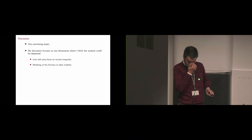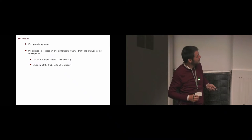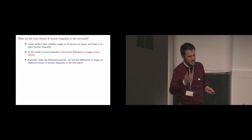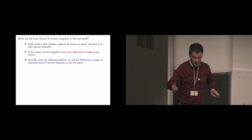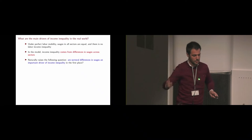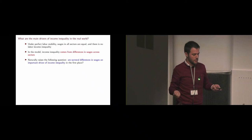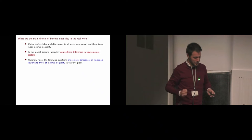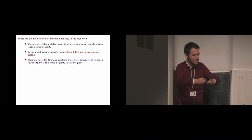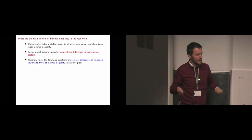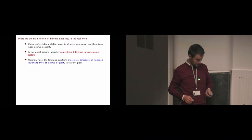Let me start by relating the model to data and facts on income inequality. Just to re-state something Glenn already said: under perfect labor mobility, a productivity shock in one sector generates wages that are equalized across all sectors in equilibrium, so there is no labor income inequality. To have income inequality in this model, you need frictions to labor mobility, and the differences generated are differences across sectors. So income inequality in this model arises to the extent that wages differ across sectors, which raises a natural question: are differences in wages across sectors an important driver of income inequality in real life?